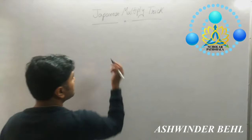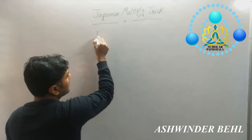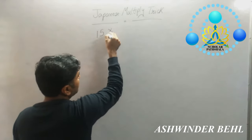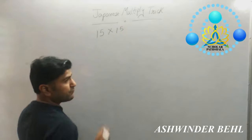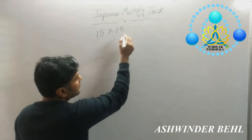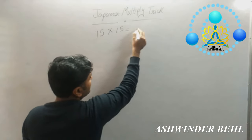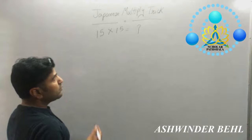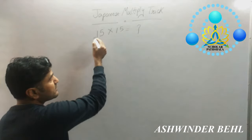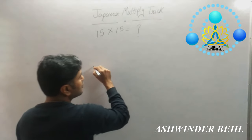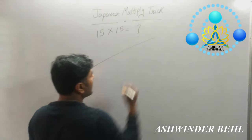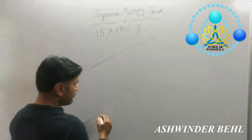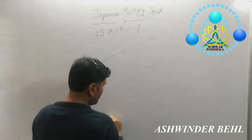So if we have two numbers, that is 15 multiplied by 15. What is the answer? Same process we will do. First digit is 1, so you can draw one line. And next digit is 5, so you will draw 5 lines: 1, 2, 3, 4 and 5. Next number on the right hand side is 5.